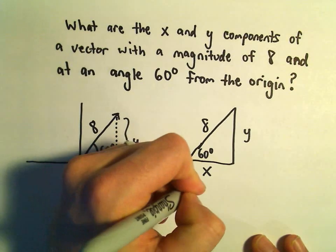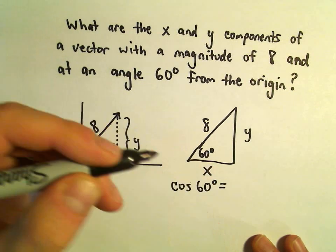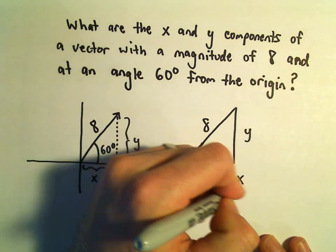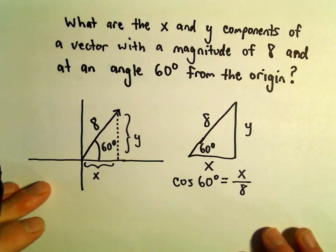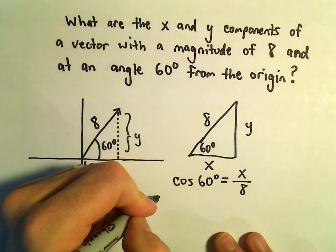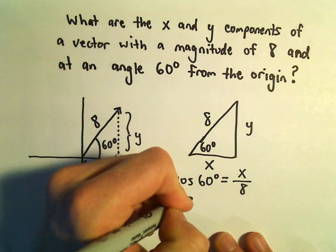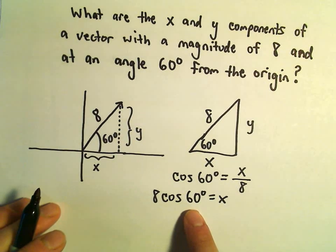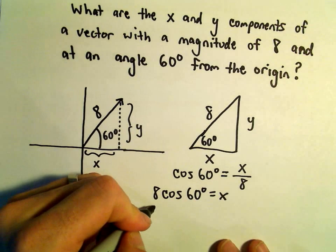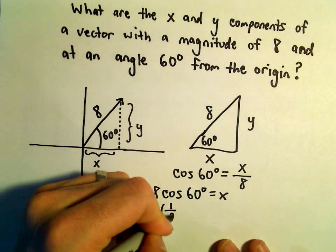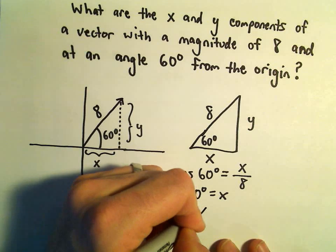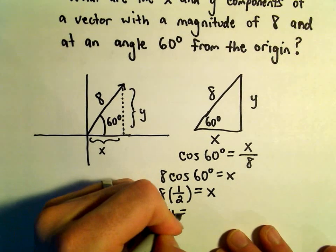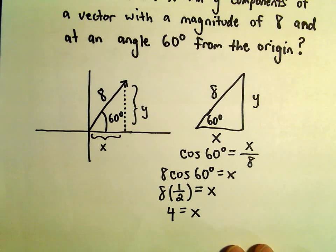Notice cosine of 60 degrees. Remember, cosine is the adjacent over the hypotenuse, so that'll give us x over 8. If we multiply both sides by 8, we'll get 8 cosine of 60 degrees equals x. Cosine of 60 degrees is 1 half. So 8 times 1 half is 4. That's going to be our first component.